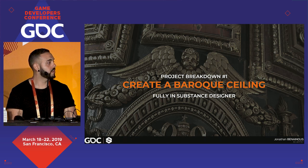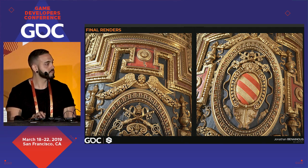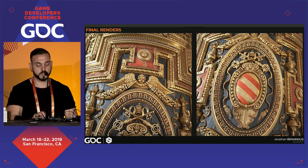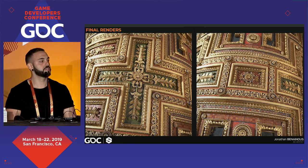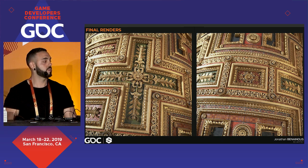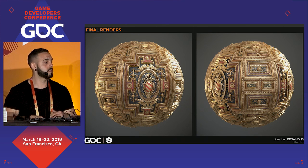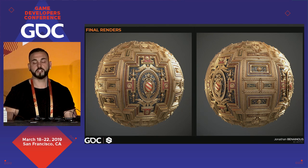Project breakdown number one: creating a baroque ceiling fully in Substance Designer. Here are a few renders, rendered in Marmoset Toolbag 3. The goal of this project was to challenge myself on creating intricate shapes and patterns in Substance Designer without using any external 3D programs. I played around with SD to find workarounds and new techniques to make complex components. I learned a lot on this project, even techniques I now use on organic materials. I truly recommend going out of your comfort zone to create complex materials.